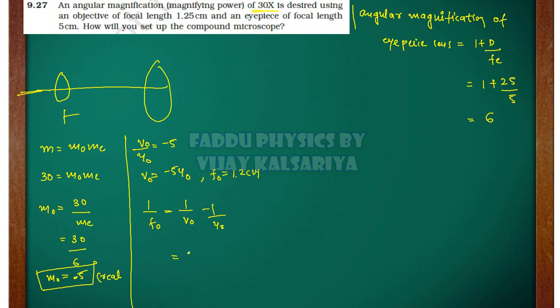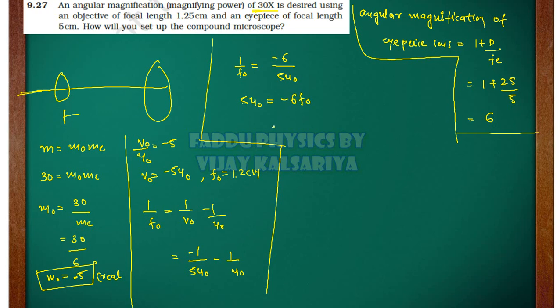So minus 1 by 5u0 minus 1 by u0. We simplify it: 1 by f0 is equal to 6 divided by 5u0. So 5u0 is equal to minus 6f0, so u0 is equal to minus 7.5 divided by 5 equals minus 1.5 cm.